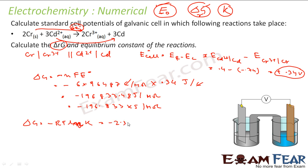This equals minus 2.303 RT log K. So we know all the values, we can find the value of K.